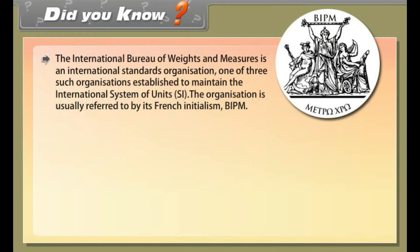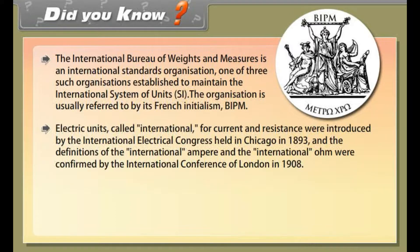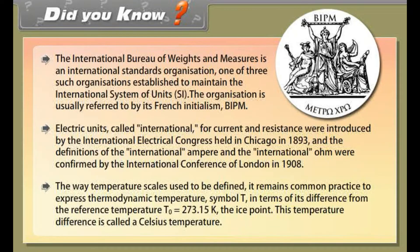Did you know? The International Bureau of Weights and Measures is an international standards organization, one of three such organizations established to maintain the International System of Units (SI). The organization is usually referred to by its French initialism BIPM. Electric units called international for current and resistance were introduced by the International Electrical Congress held in Chicago in 1893, and the definitions of the international ampere and international ohm were confirmed by the International Conference of London in 1908. The way temperature scales used to be defined, it remains common practice to express thermodynamic temperature, called T, in terms of its difference from the reference temperature T0 = 273.15 Kelvin, the ice point. This temperature difference is called a Celsius temperature.